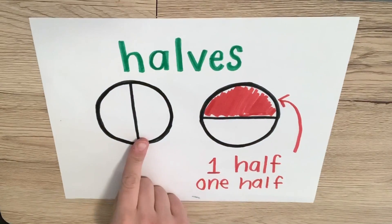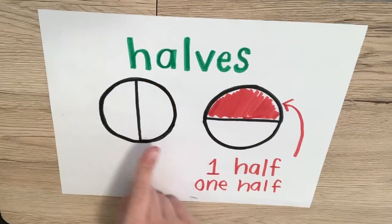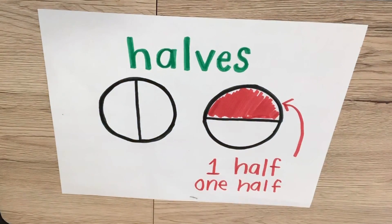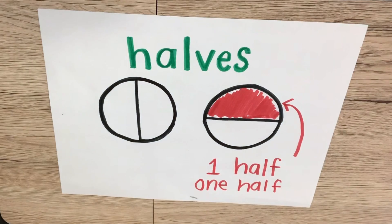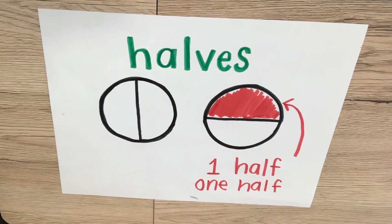So it's divided into halves, and one half is colored in. Now you're going to practice partitioning or dividing a shape into halves — two equal parts. Half fun, get it? Half fun!